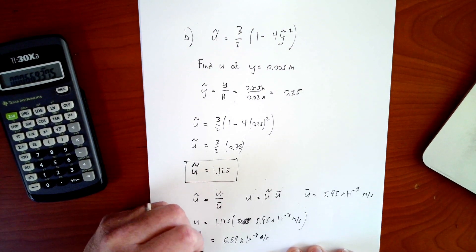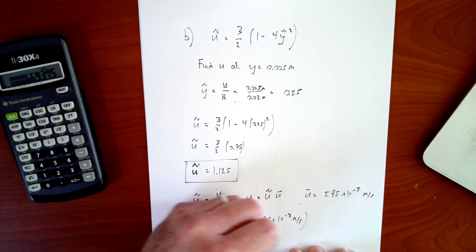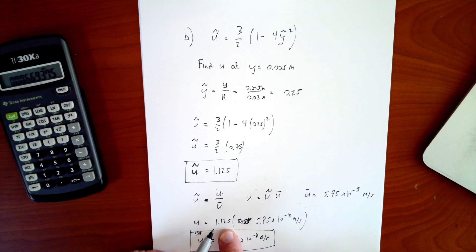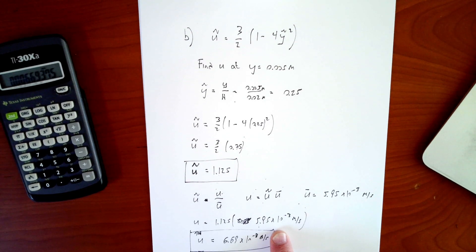So u, the velocity is equal to 1.125 times 5.95 e-3, which is equal to 6.69 times 10 to the minus 3 meters per second. So that's my u, not my u bar. My u is equal to 6.69 times 10 to the minus 3, but it's 1.125 dimensionless times that average velocity. So that's it.